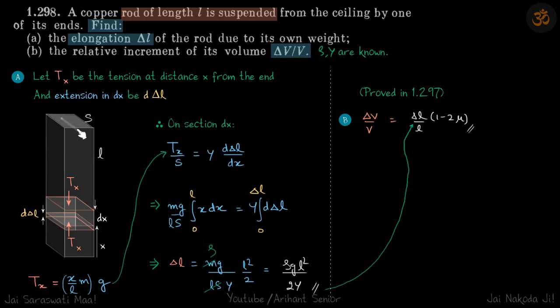We have a rod that's suspended from the ceiling. We need to find the delta L of the rod and delta V by V. The second part, delta V by V, we have already calculated previously in the previous problem, and that is delta L by L times 1 minus 2 mu. So we need delta L by L, which we will get from the first part.